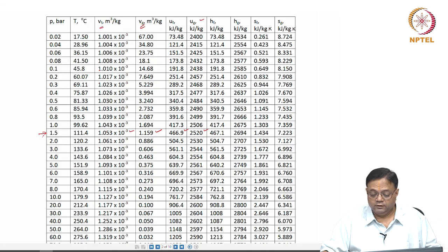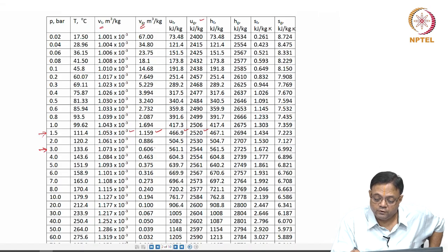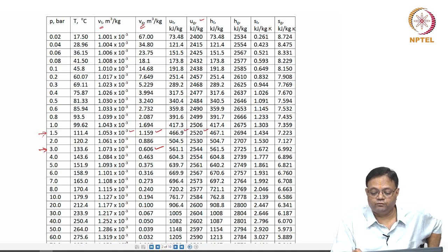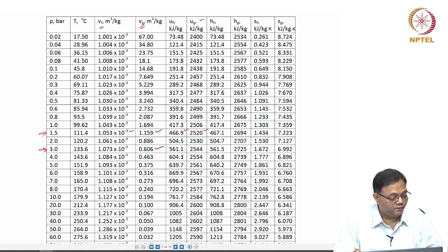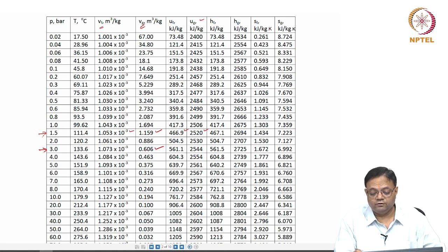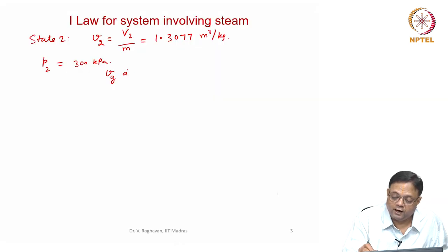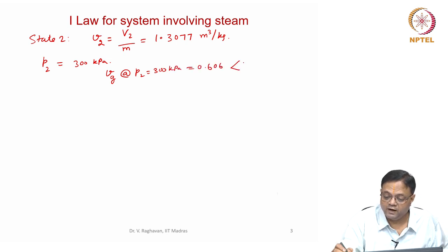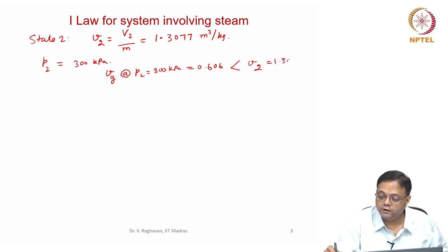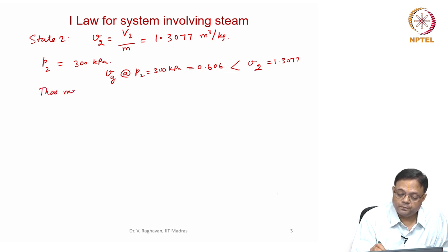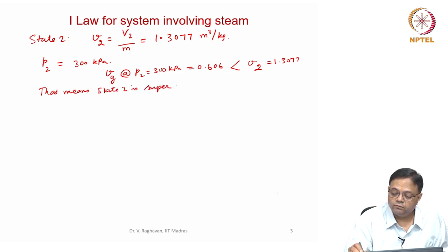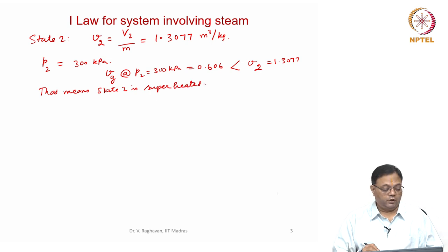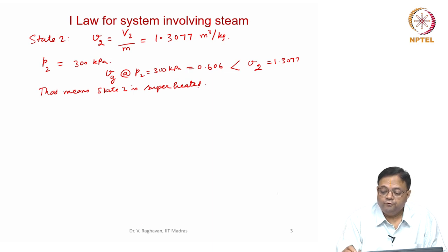Going to the steam tables for 300 kilopascals: Vg at that pressure is 0.606 m³/kg, but the specific volume at state 2 was calculated as 1.3077 m³/kg. Since V2 > Vg at P2, that means state 2 is superheated — we must use the superheated steam tables.